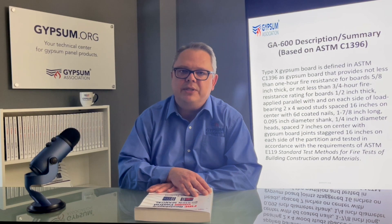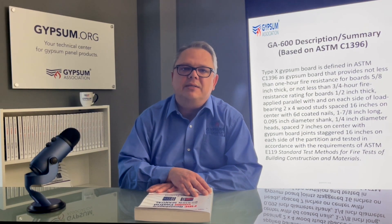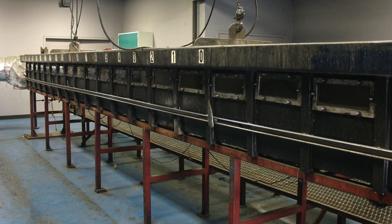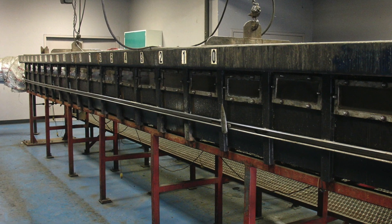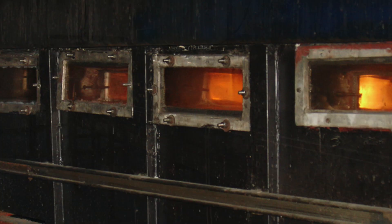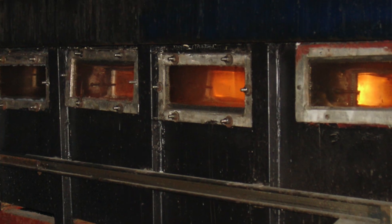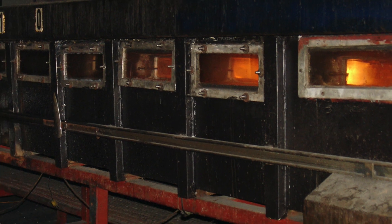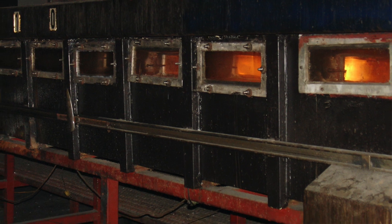Masonry units and additional composite assemblies of structural materials for buildings are tested using E119, but it is the assemblies, not the products, that derive a rating from the test. It is also worth noting that another test, the flame spread test ASTM E84 — Standard Test Method for Surface Burning Characteristics of Building Materials — is not used exclusively for gypsum panels, nor does it indicate that a panel is Type X.